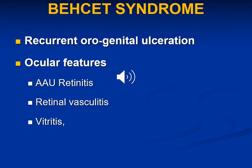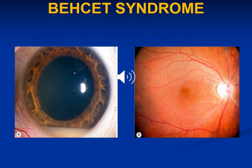Behçet's syndrome is another common cause of uveitis. It is characterized by the presence of urogenital ulcers in association with uveitis. The uveitis could present as retinitis, vasculitis, or vitreitis. The photo on the right shows white sheathing of retinal blood vessels — this is retinal vasculitis — while the left photo shows anterior uveitis with hypopyon formation.